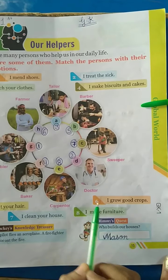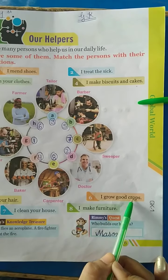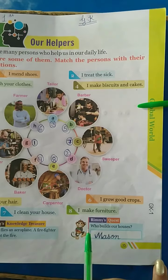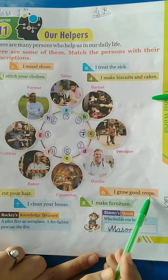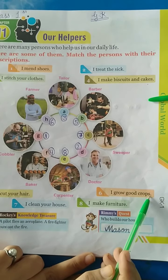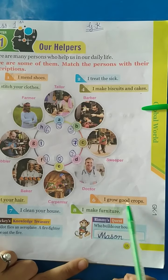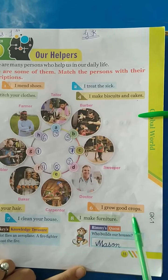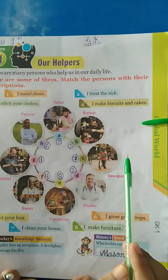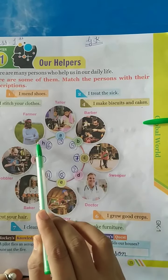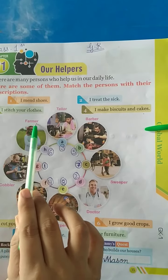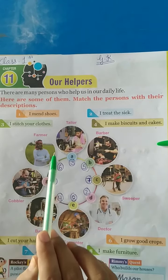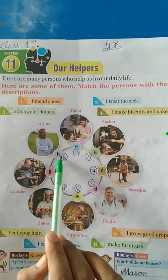Number six: I grow good crops. Aapke liye fasal korn ugaata hai? Yeah, it's H — farmer. F-A-R-M-E-R, farmer. So, write number six here.